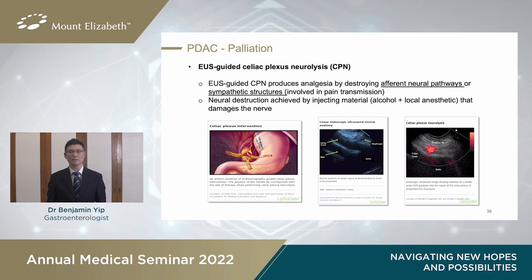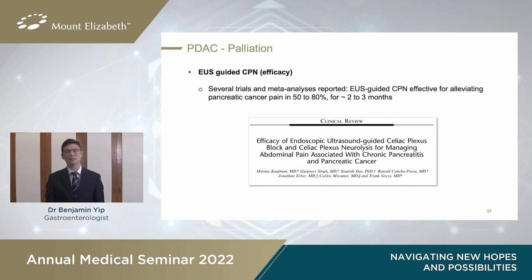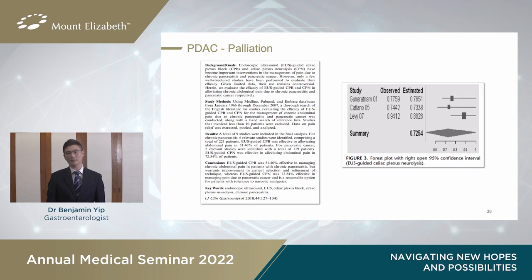For palliation and pain relief, one can ablate or neurolise the celiac plexus via EUS. This is done by destroying the afferent neural pathways and sympathetic structures, achieved by injecting a mixture of alcohol and local anaesthetic. The cartoon on the lower left shows EUS in the proximal stomach, and the celiac plexus is accessed at the celiac takeoff from the abdominal aorta, with the celiac plexus found on either side. The efficacy is proven in meta-analysis: celiac plexus neurolysis or CPN is good at relieving cancer pain in 50–80% of patients and lasts for two to three months. A meta-analysis looking at three papers for pancreatic cancer patients showed efficacy of about 72.5%.